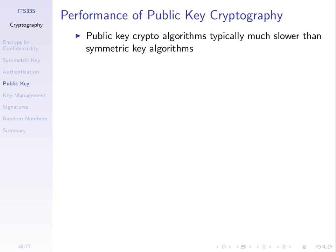A significant problem: most public key cryptosystems, especially RSA, are much slower than symmetric key encryption. You can try a speed test in OpenSSL — take a file and encrypt it with AES, then with RSA; RSA will be much slower. It's too slow to encrypt large files. So in practice, public key cryptography is only used to encrypt small amounts of information.